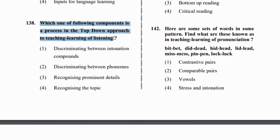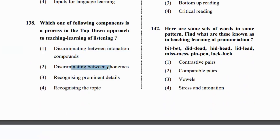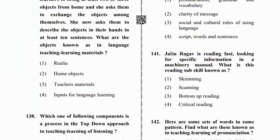Next question: which of the following is a component of the top-down approach? Options include: to discriminate connotation, to discriminate phonemes, to discriminate prominent details, or to understand the topic. When the teacher tells the topic at the beginning, that is the top-down approach — the topic starts from the beginning.